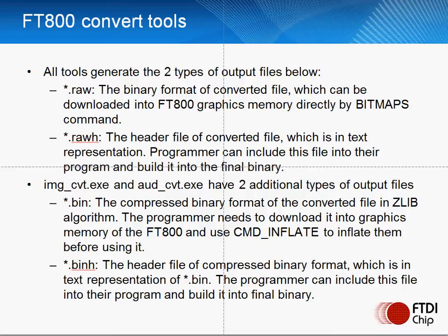With the image and audio conversion utilities, there are an additional two types of output file: binary and binary header. These are essentially compressed versions of the raw and raw header files. To access the data from the binary, the inflate command is required to inflate the data before using it.